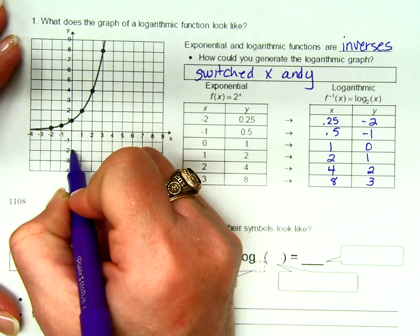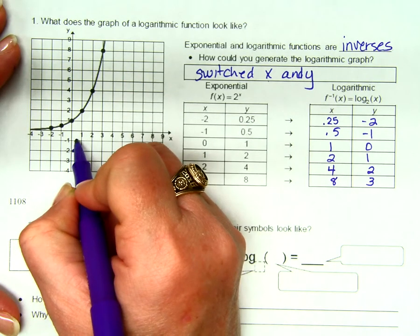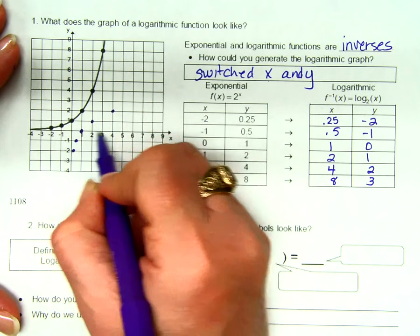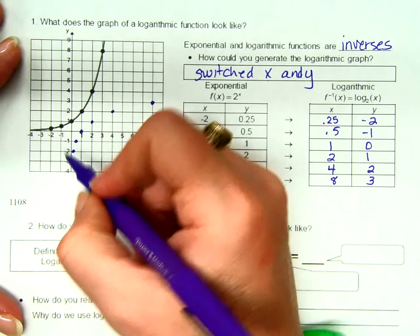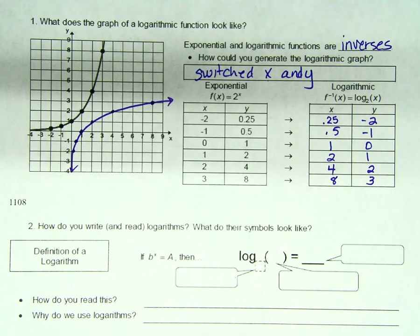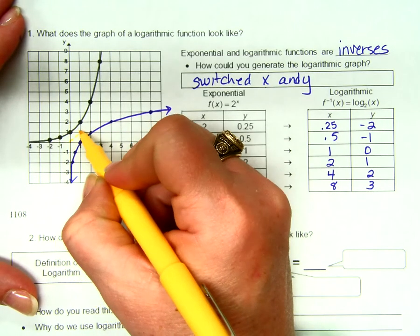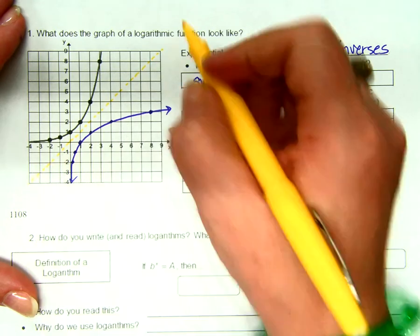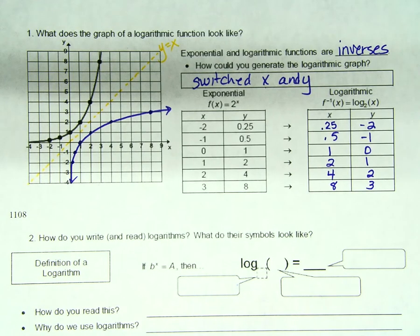Okay? So 0.25, negative 2. 0.25, negative 1, 1, 0, 2, 1, 4, 2, and 8, 3. How can I tell by looking at a graph if two functions are inverses of each other? If I graph the line y equals x and those two are reflections. That's exactly right. Okay? Are these two graphs reflections of each other over the line y equals x? Yeah, so that's more proof that they're inverses of each other. Okay? Now we got this one by switching x and y, so hopefully they're inverses of each other on the graph, right?